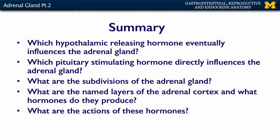Those are the three major layers and the hormone products of each of the cortical layers of the adrenal gland. In summary, what you should know is which hypothalamic releasing hormone eventually influences the adrenal gland, which pituitary stimulating hormone directly influences the adrenal gland, what the subdivisions of the adrenal gland are, what the named layers of the adrenal cortex are, what hormones they produce, and what the actions of these adrenal cortical hormones are.